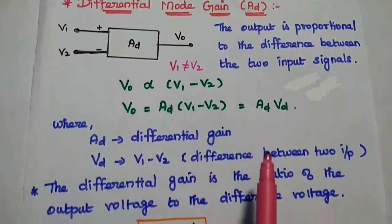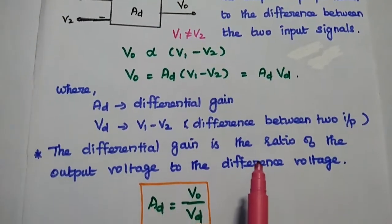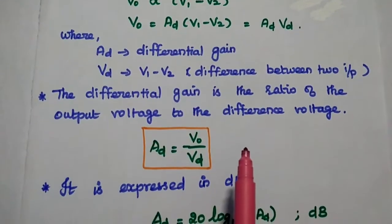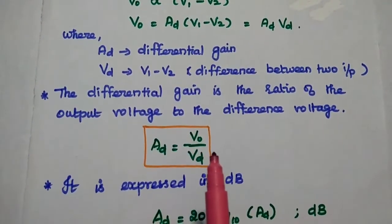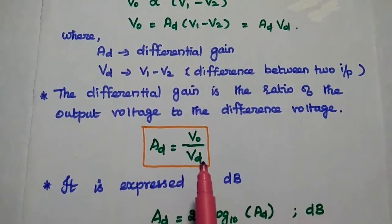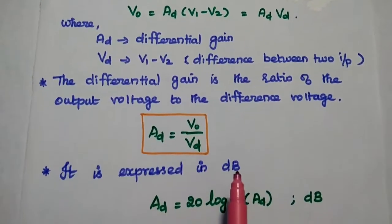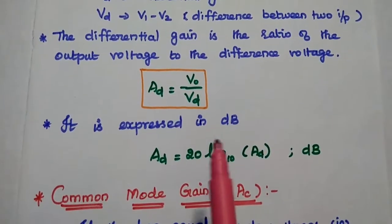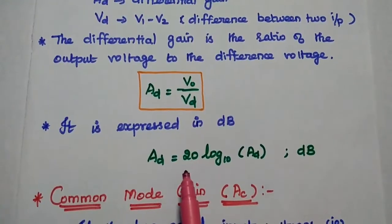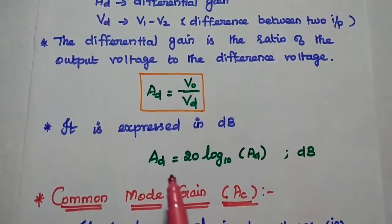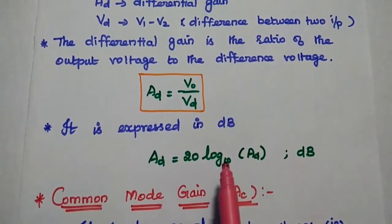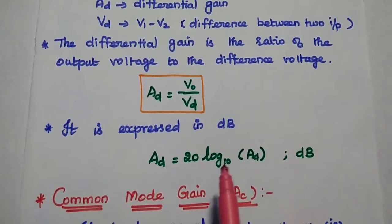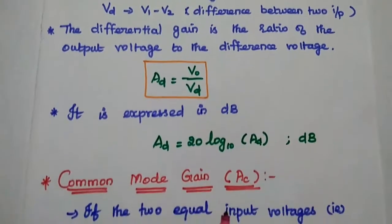V0 is equal to AD into V1 minus V2, where AD is the differential gain of this amplifier. V1 minus V2 can be represented as Vd, that is the difference voltage between V1 and V2. From this expression, we can write that AD, the differential gain, is equal to V0 divided by Vd. This differential gain can also be represented in dB using the expression: AD(dB) = 20 log AD.